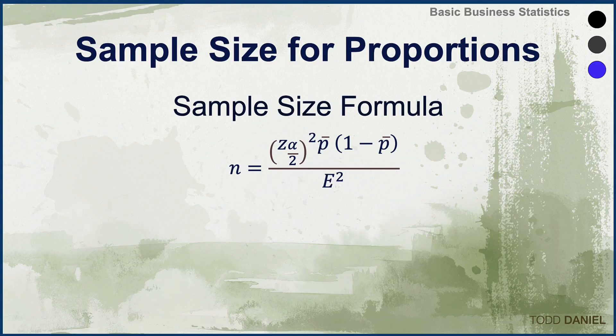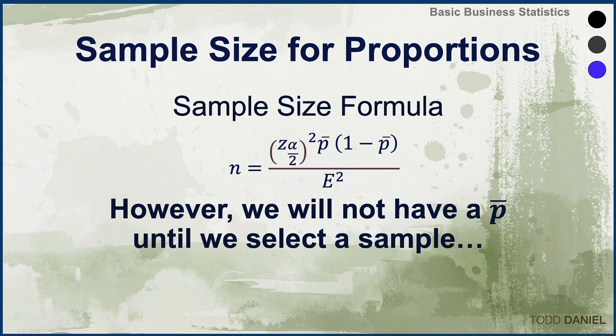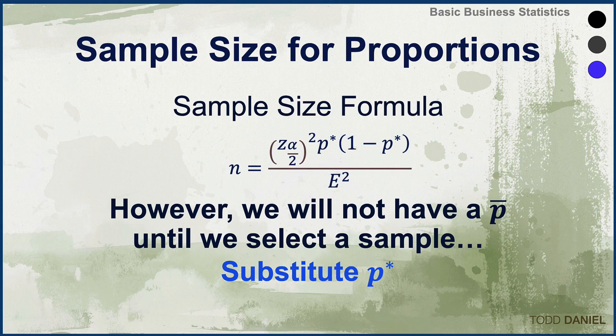As we look at this sample size formula, we do need p-bar. Just like we've seen with x-bar, which is a mean, p-bar is the average proportion. However, we cannot calculate the average proportion in a sample until we select a sample. So we will do exactly what we did when estimating intervals around means — we're going to come up with a planning proportion. We will substitute that planning proportion, which is p-asterisk, every place in this formula where we have a p-bar.